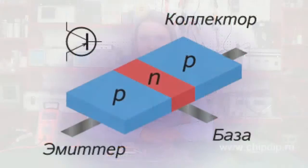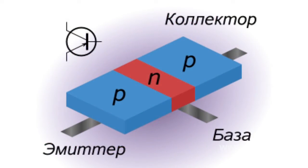A bipolar transistor is a semiconductor device having three outputs: an emitter, a collector, and a base. The basis of a bipolar transistor is formed by two PN junctions.